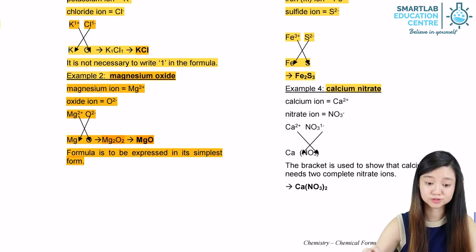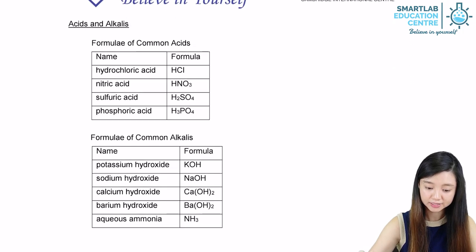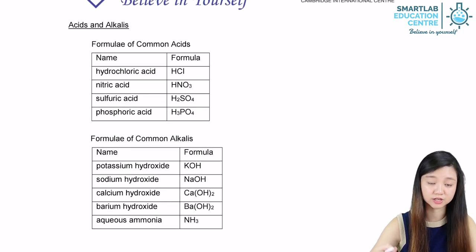So that's how we are going to write out ionic compound formulas. Below are other examples of ionic compounds which you can look at.